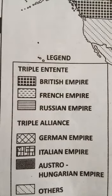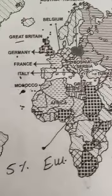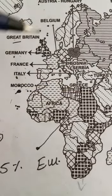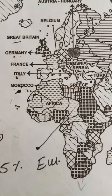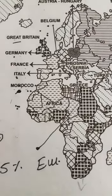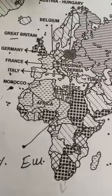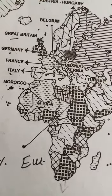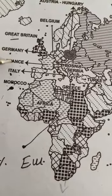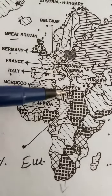Now we move on to the countries and where they are positioned on the world map. Most of the European countries had dominant power during World War I, and these European countries were occupying Asia and also Africa. The European countries were Austria-Hungary, Belgium, Great Britain, Germany, France, Italy, Bosnia, Serbia and also Greece.